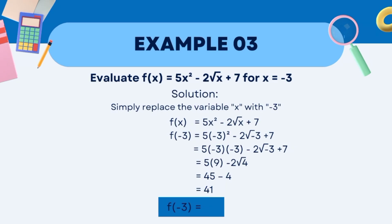Let's move to the third example. We have f(x) = 5x² − 2√x + 7 for x = −3. First, substitute the given value of negative 3 into the given variable. So, f(−3) = 5 times negative 3 squared minus 2 times the square root of negative 3, plus 7.